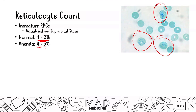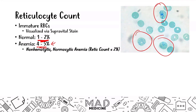Reticulocyte count doesn't mean it's just going to be 4–5%. If it's a severe anemia, you'll have an even higher reticulocyte count. In non-hemolytic normocytic anemia, you're going to have a reticulocyte count that is less than or equal to 2%. Mainly in these cases you are just having a decreased production of red blood cells — that's what's happening in aplastic anemia, anemia of chronic disease, and chronic kidney disease. You are reducing the amount of red blood cells being produced, and therefore you may see a normal reticulocyte count.